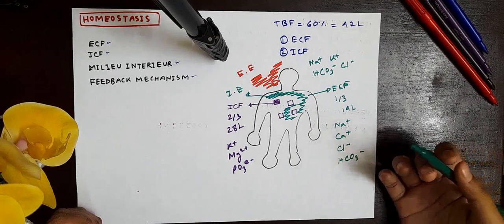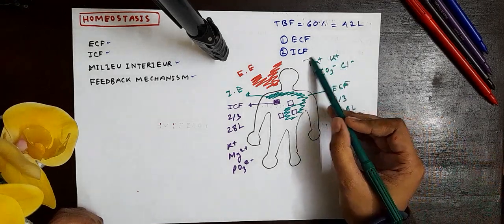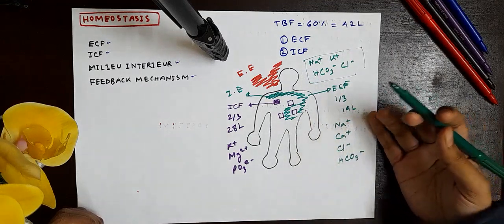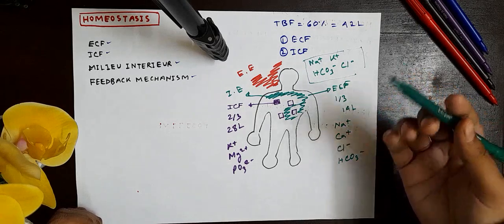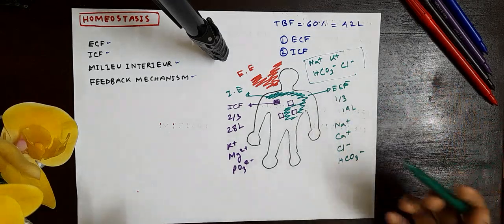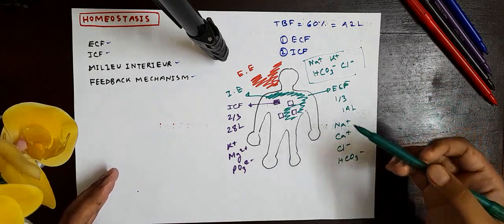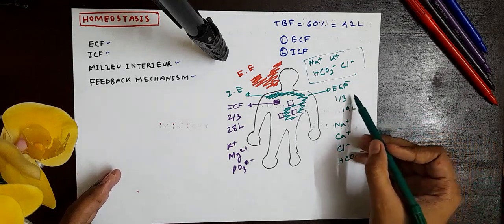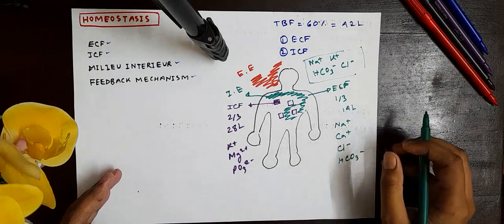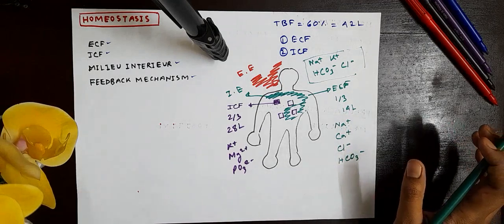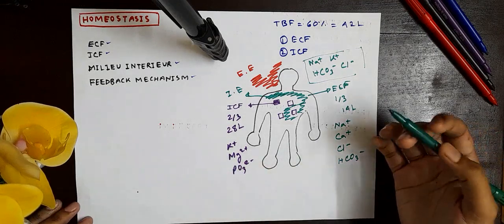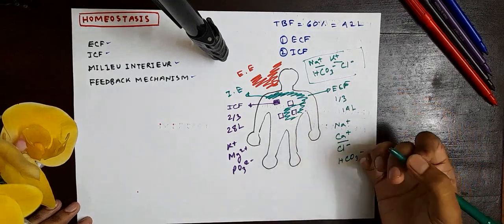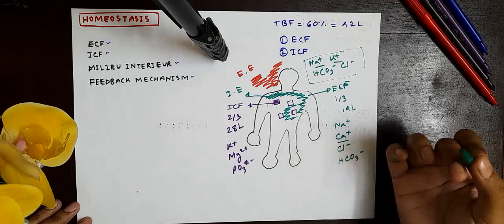ECF has a regular normal value. ECF and ICF ions each have normal values. ECF ions include sodium, potassium, and calcium, and these normal values are very commonly referenced. For example, calcium in ECF is 2.5 to 2.6 millimoles per liter.